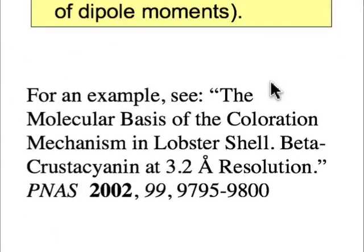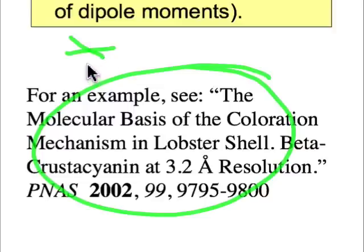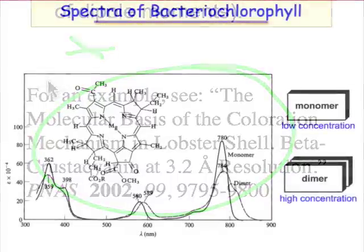A fascinating example that I recently discovered is in terms of the coloration of the lobster shell. Lobster shell involves two chromophores that associate with one another, complexed to a protein as well, and how those two chromophores are arranged determines the color that is observed.